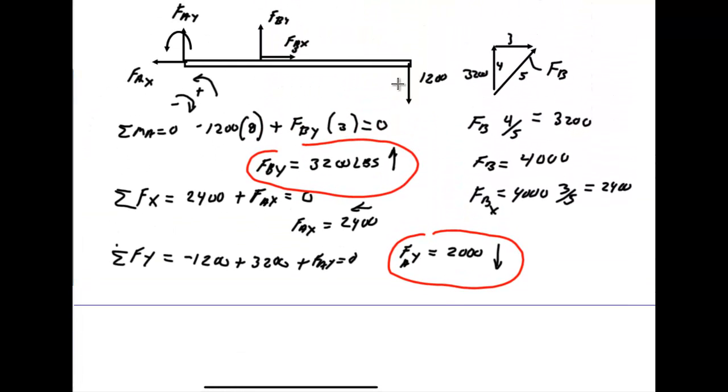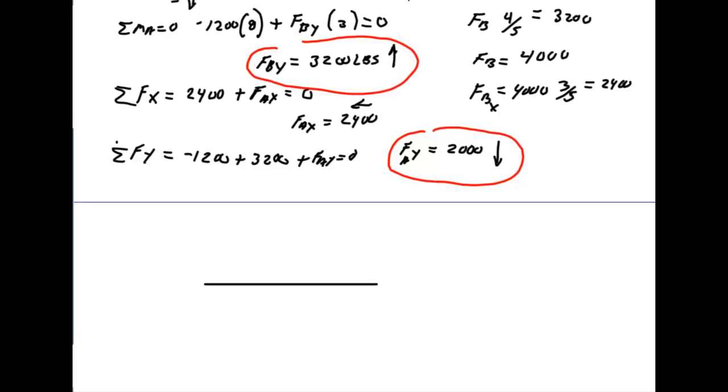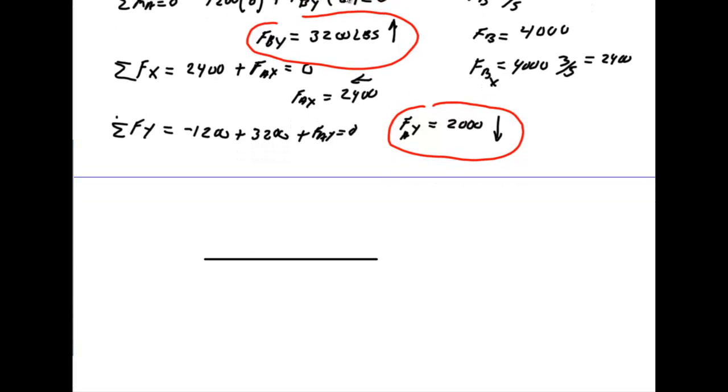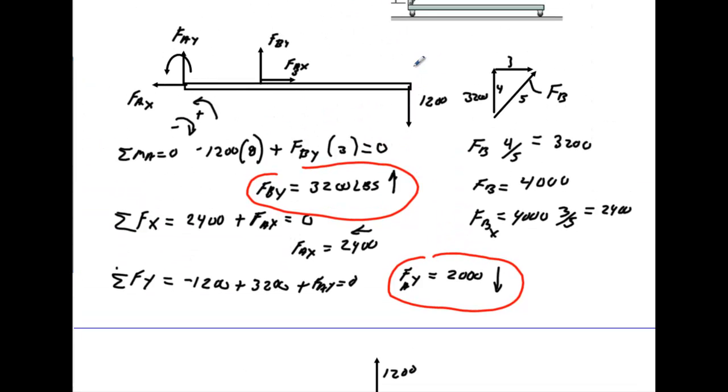All right, so we know at this end we have 1,200 coming down, and the sign convention isn't really important here. So what we're going to do, and they do this typically in engineering, is we're going to come back up because the beam is resisting that, and that's going to be 1,200. And all that means is we have 1,200 coming down, so the beam has got to resist this. As I move to the left, I immediately go up 1,200 here. Now it will stay that way until I get to this point right here.